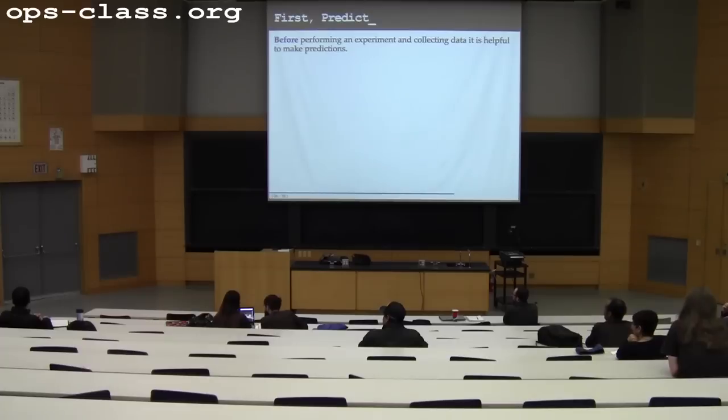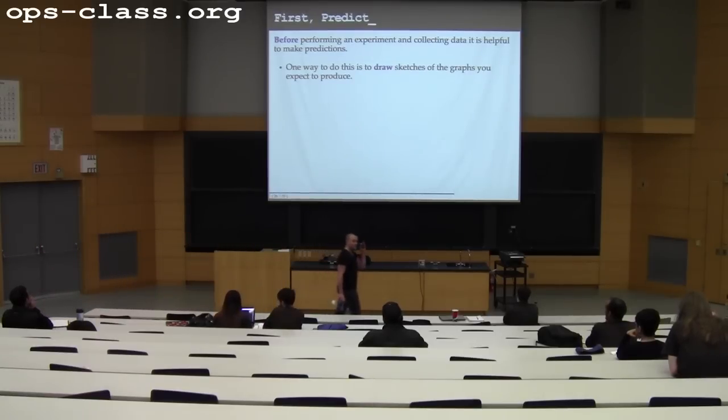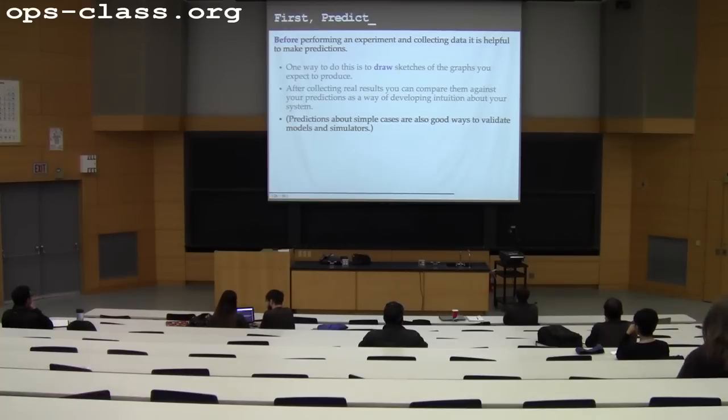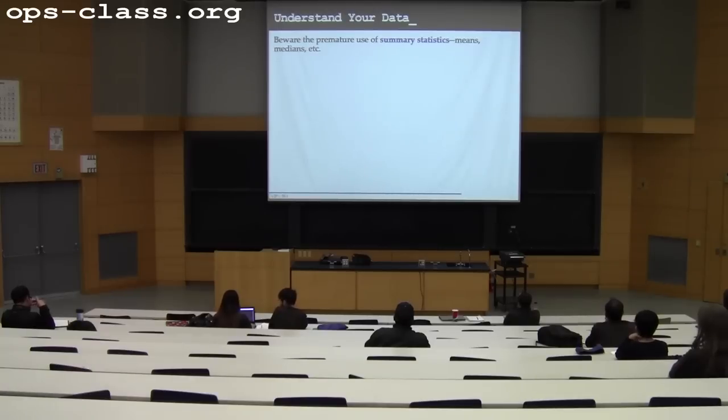So one of the first things to do when you start running systems and using statistical methods is to make some predictions before you begin the process. And I always tell my students, before you generate a graph, draw just a little sketch up on a whiteboard of what you think that graph's going to look like. Just based on your intuition. This is really helpful because if the graph comes looking out, comes out looking very different, then either you've learned something about your system, your intuition was wrong, or there's something wrong with the experiment that you're running that you need to correct. And particularly if you can make predictions about simple cases, that's a good way to start developing your intuition. So it's not a bad idea to collect some performance results for things that you think you understand.